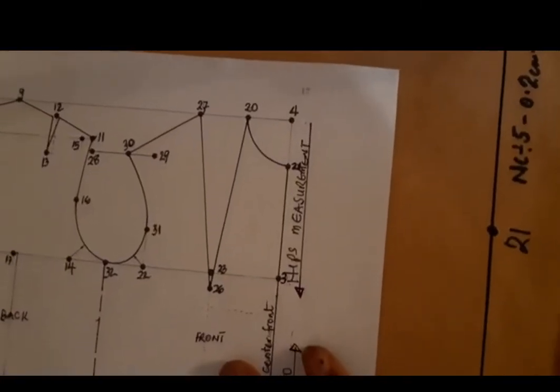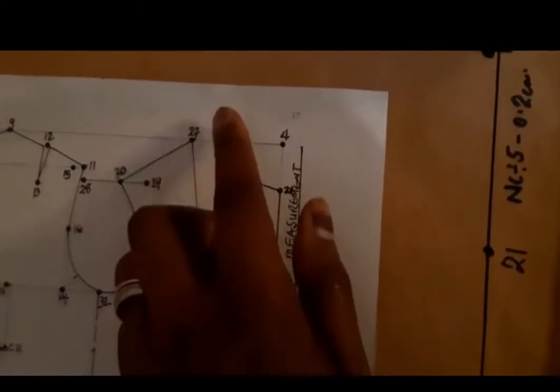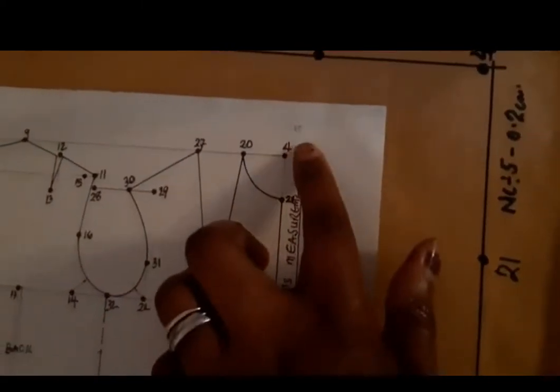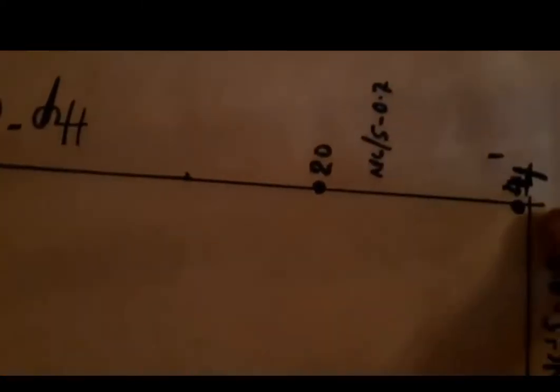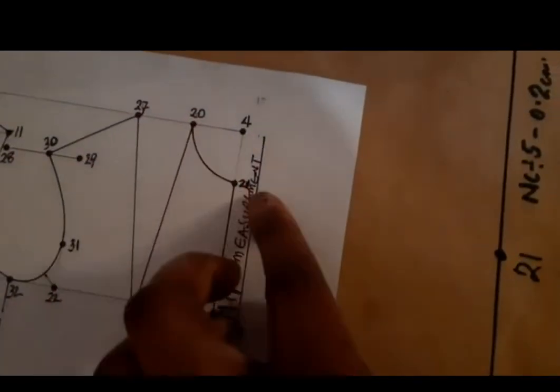Now let's come to the front end to create our neck curve. To get points 20 and 21, with point 4 at center: measure your neck circumference, divide it by 5 and subtract 0.7 centimeters — that gives you point 20. Then divide neck circumference by 5 and subtract 0.2 centimeters — that gives you point 21. Using a French curve, I have curved from point 20 to point 21 to form my front neck curve.